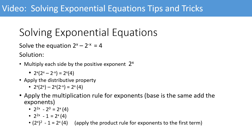Now we'll apply the product rule of exponents for the first term, and we get 2 to the exponent x, squared, minus 1, is equal to 2 to the exponent x times 4. If you're not sure how 2 to the exponent 2x can equal 2 to the exponent x squared, try filling in a number for x, solving it both ways, and comparing your answers.